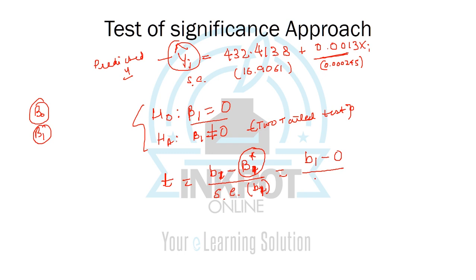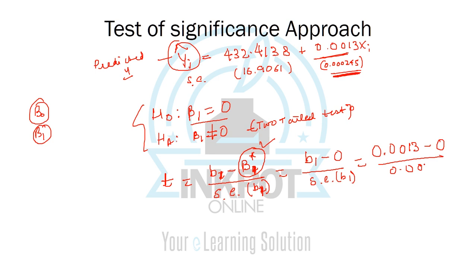The formula is b1 minus 0, divided by the standard error of b1. Note that the hypothesized value may not always be zero — in an exam they could make it 1, 2, 10, or any value; you just plug in the null hypothesis value. In this context, b1 is 0.0013 minus 0, divided by the standard error of the slope term which is 0.000245, giving a calculated t-value of 5.43.